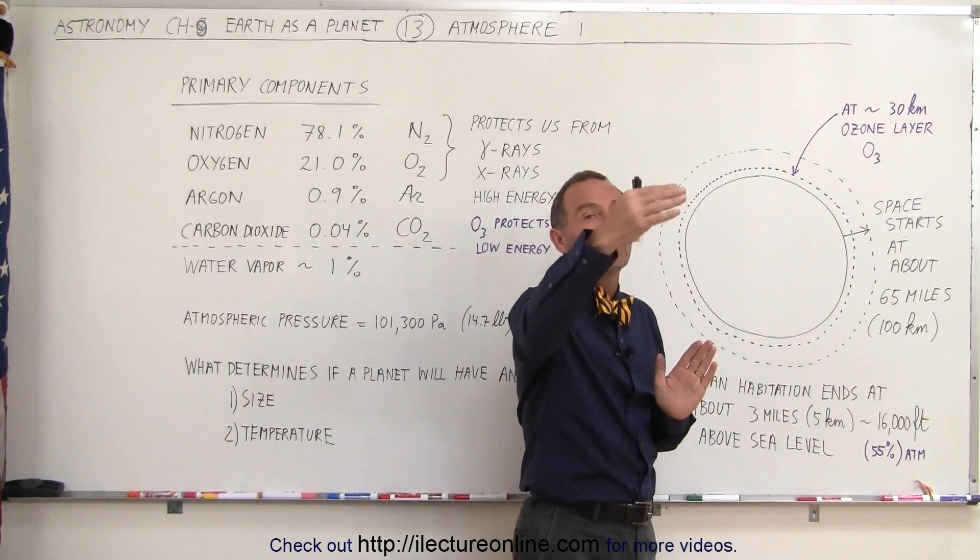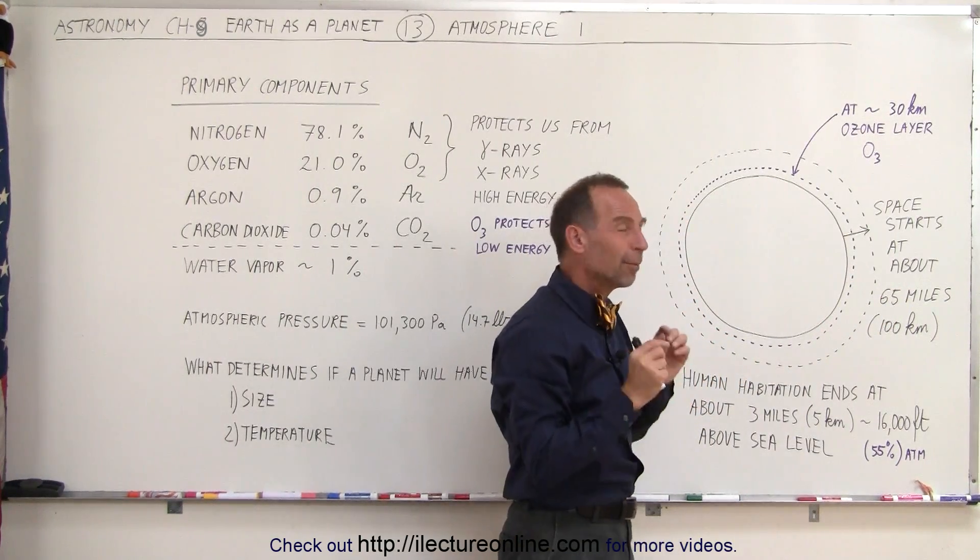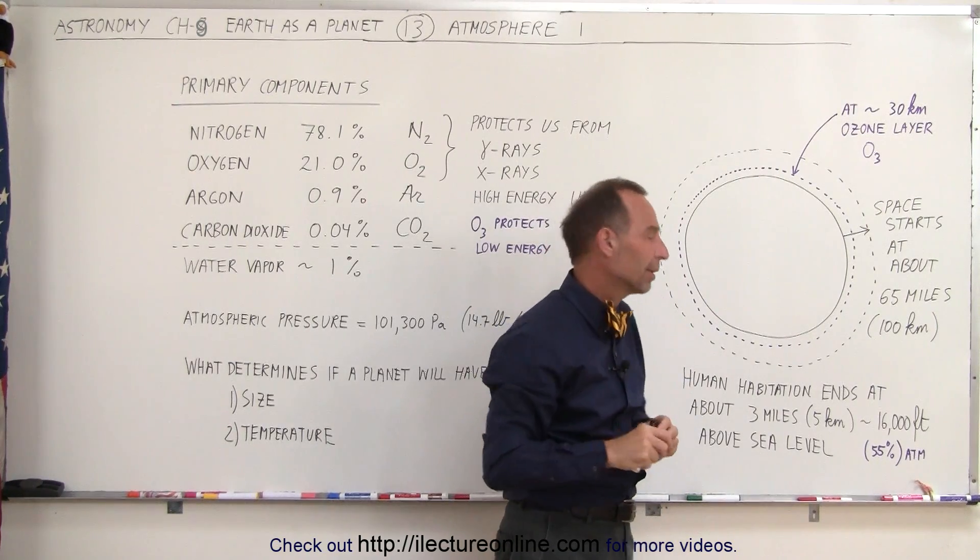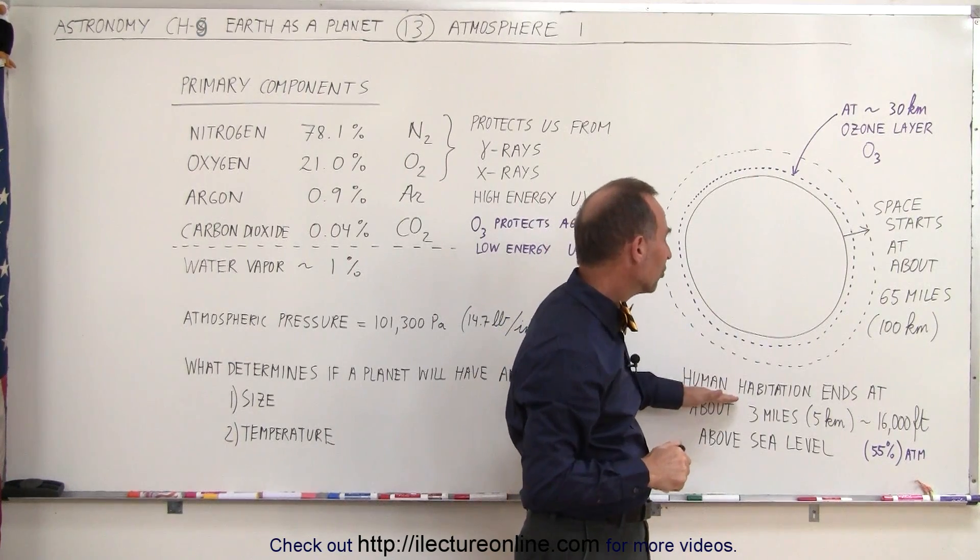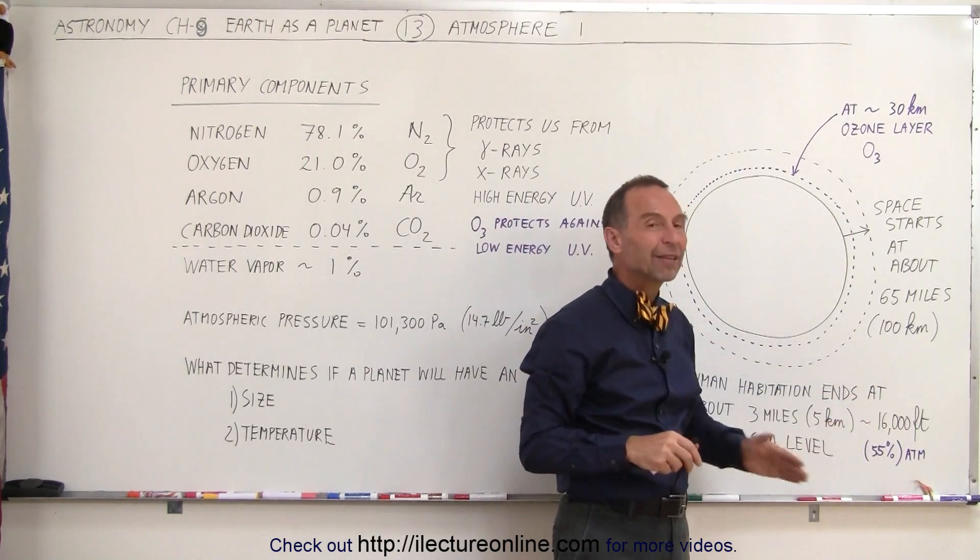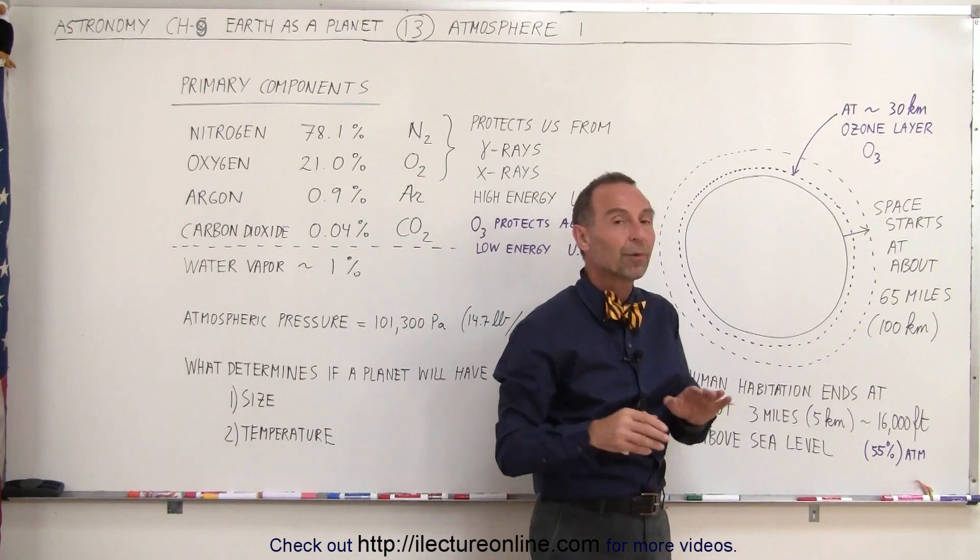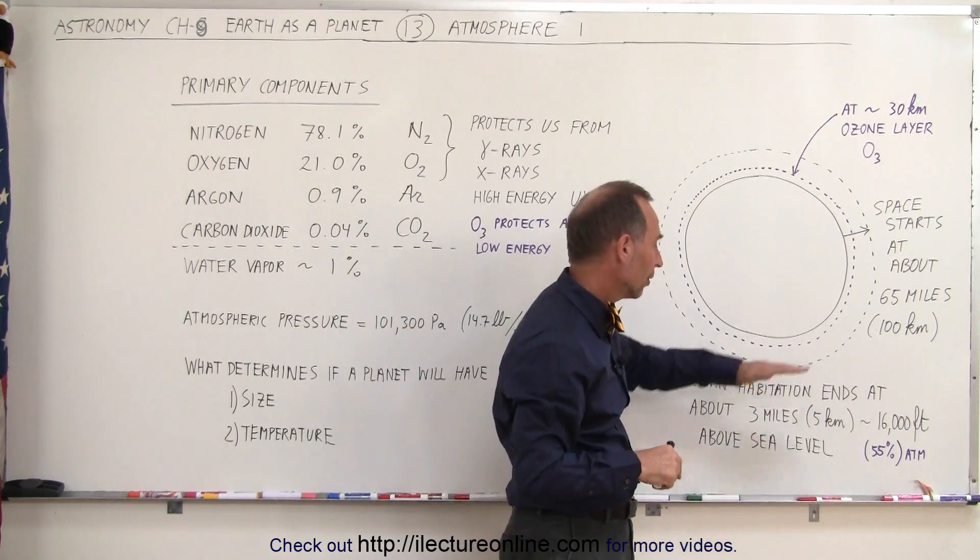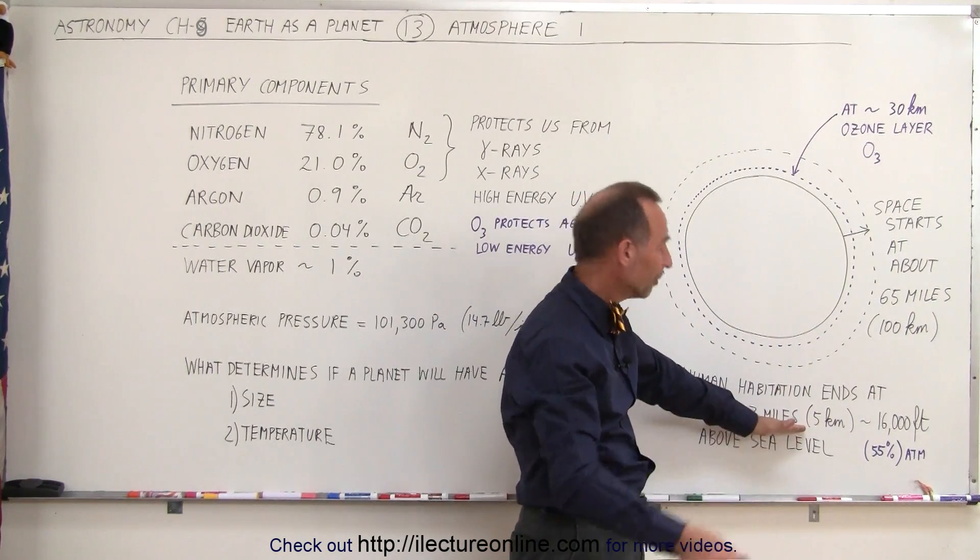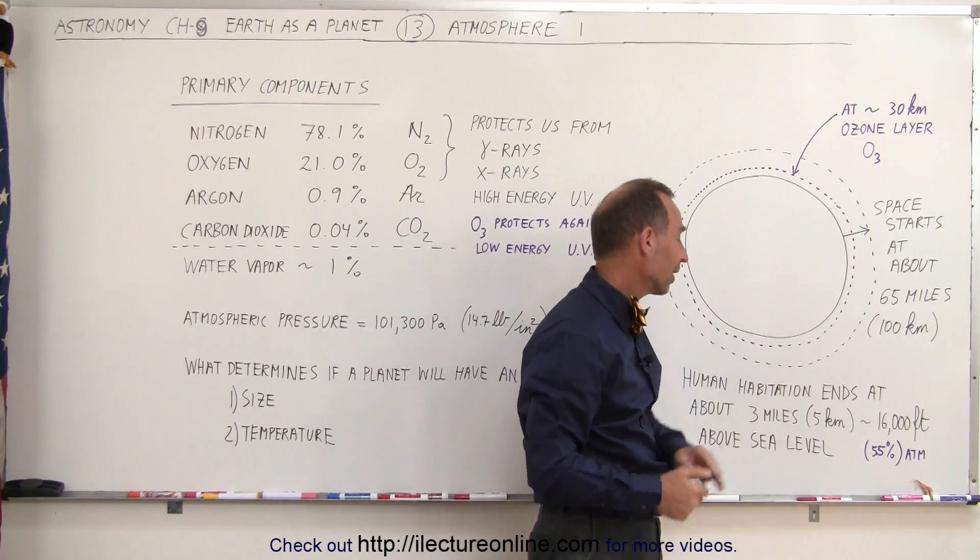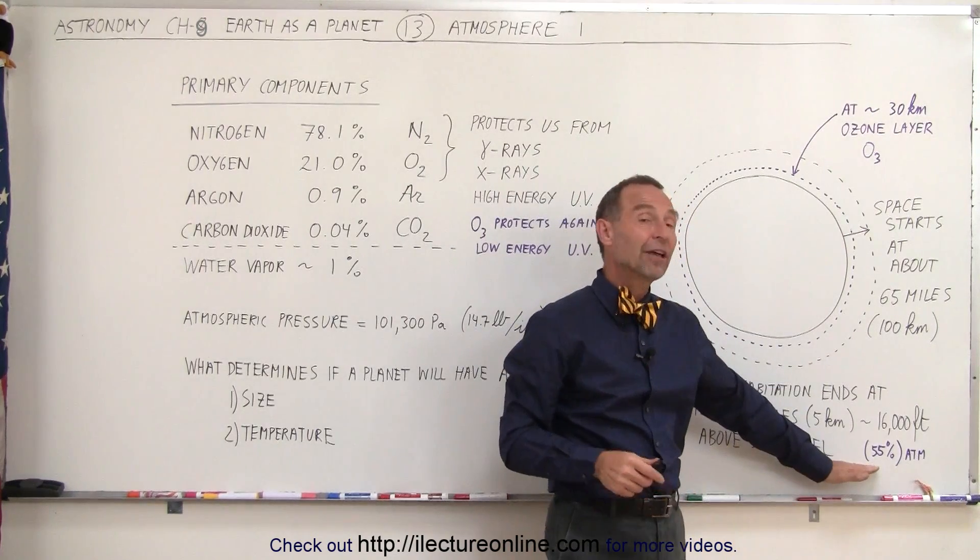The atmosphere continues beyond that range. Matter of fact, several hundred miles above the surface of the Earth, but at that point, the atmosphere is so thin, it's barely noticeable. Human habitation really ends at a height of about 15,000-16,000 feet, which is about 3 miles or 5 kilometers above sea level.